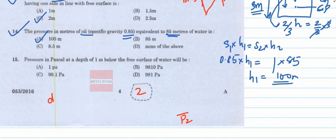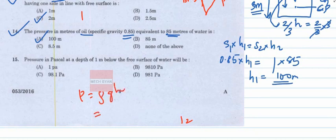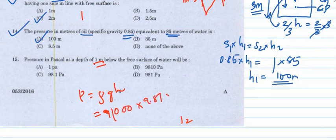Question 15: The pressure in Pascal at a depth of 1 meter below the free surface of water. Using P = ρgH = 1000 × 9.81 × 1 = 9810 Pascal. The answer is option B.